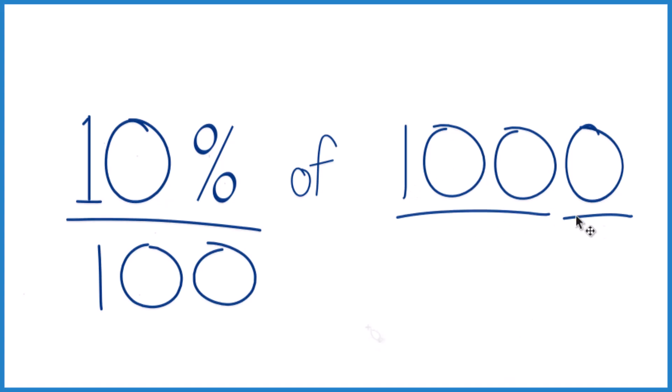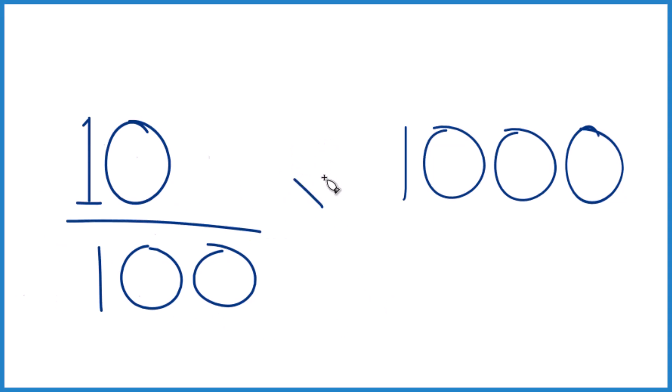Here's another way to do it. We said percent is per 100, so we have 10 per 100. Instead of 'of', what we're gonna do is call that multiplication. I'm gonna put over 1 here. It's still 1,000, but everything lines up now.